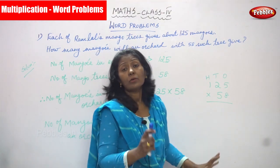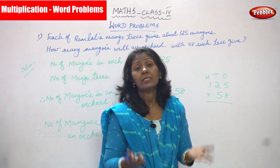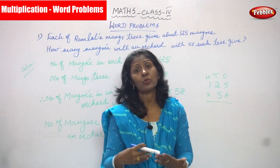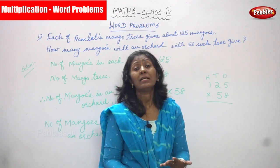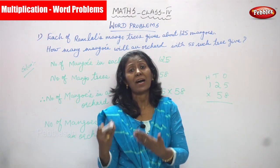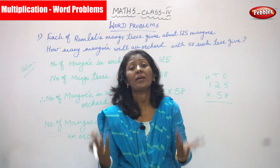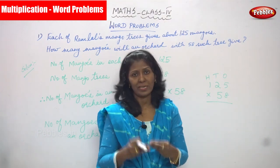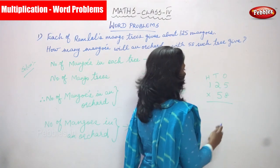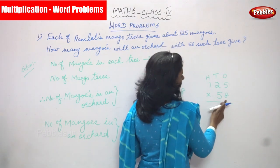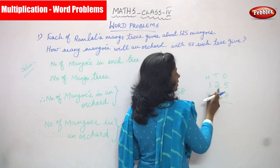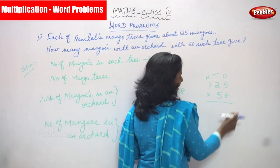So I'm going to multiply 125 by 58 to find the total number of mangoes in the orchard. First I'm going to multiply by the ones place. The number in the ones place is 8. So I'm going to multiply 125 by 8.